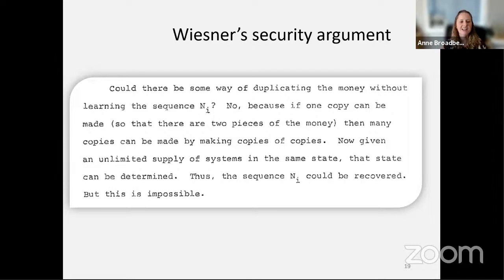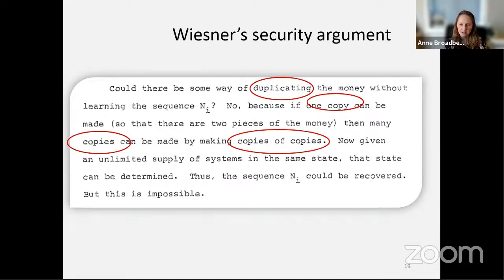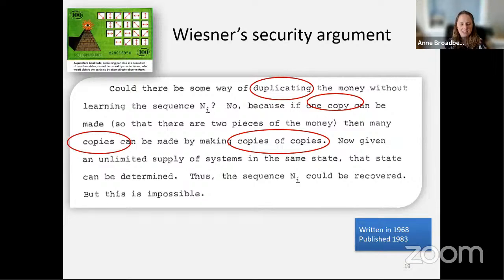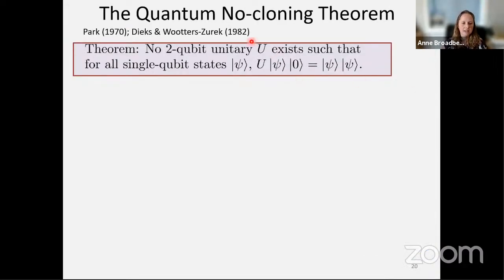Looking at Wiesner's argument, written in 1968, the argument is all about duplication: could there be some way of duplicating the money without learning the sequence? No, because if one can copy then many copies can be made by making copies of copies. It's all about the intuition that copies are impossible quantumly. The formalization of the no-cloning theorem is mostly cited to Wootters and Zurek, but was also simultaneously proposed by Dieks, and Park also had a version as early as 1970.